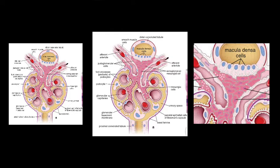The juxtaglomerular apparatus is a specialized organ situated near the glomerulus of each nephron. It comprises mainly three types of structures: the juxtaglomerular cells, macula densa, and lacis cells. Let's deal with each one by one.